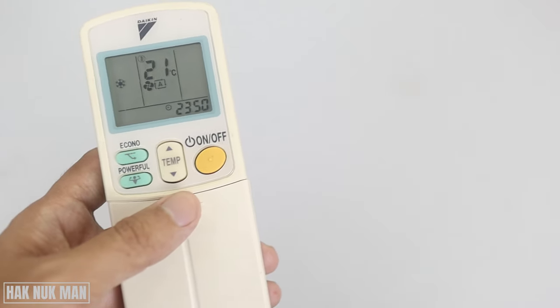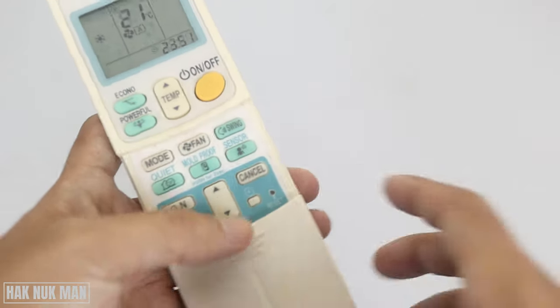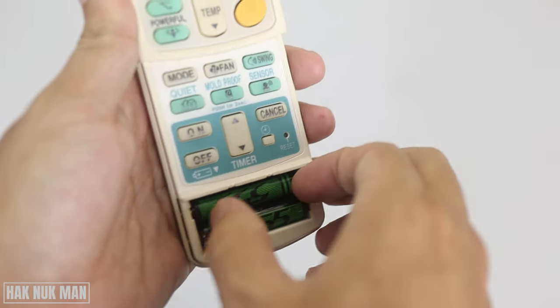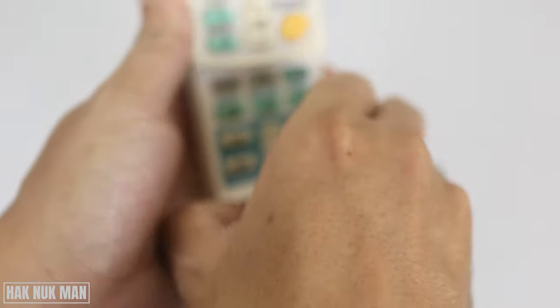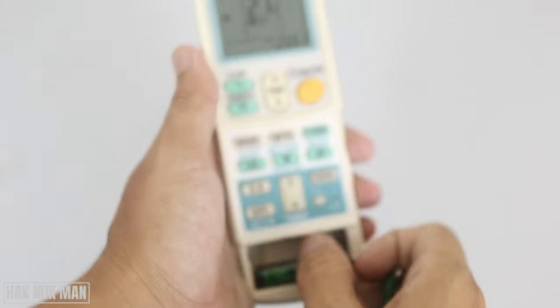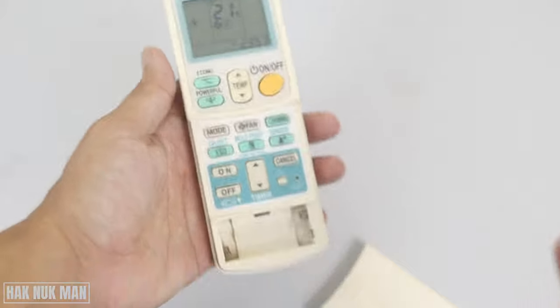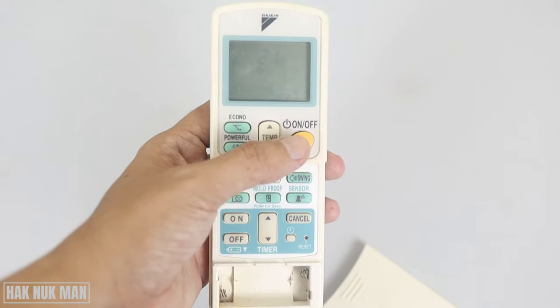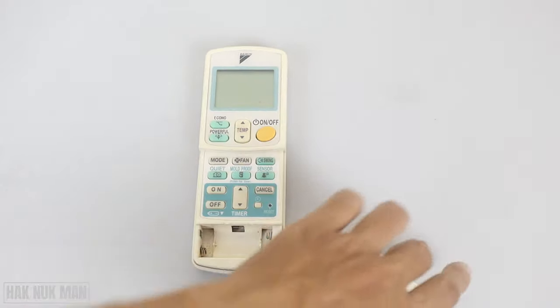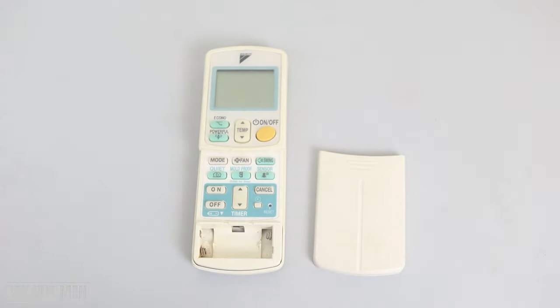Okay, another way to reset the remote control is to remove the battery for about one to five minutes. So now we take out the battery, and you can see the display is now gone. You need to wait—I suggest waiting about five minutes—and then put your battery back to the remote control.